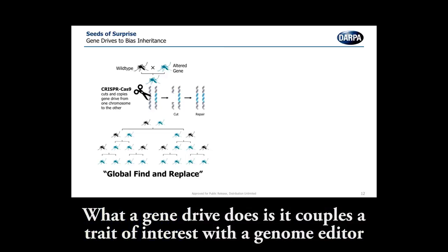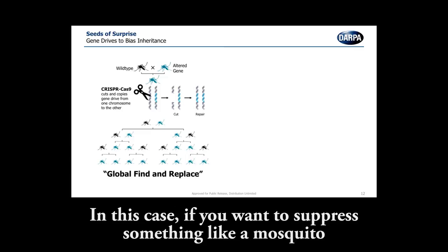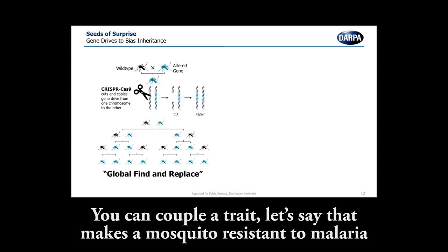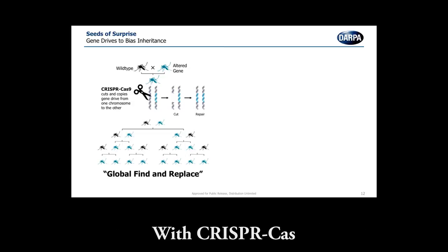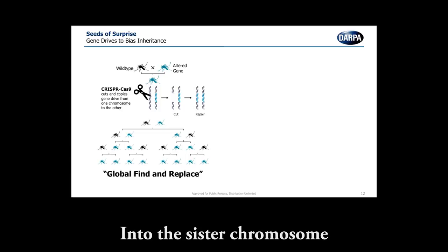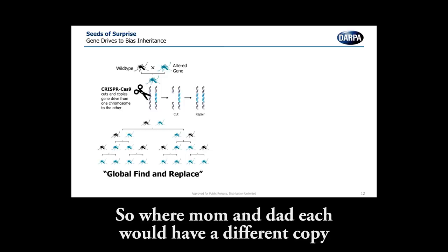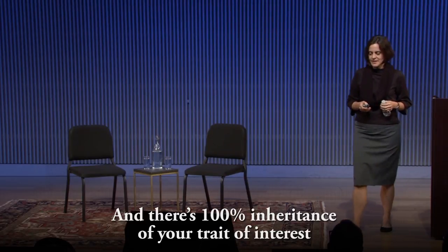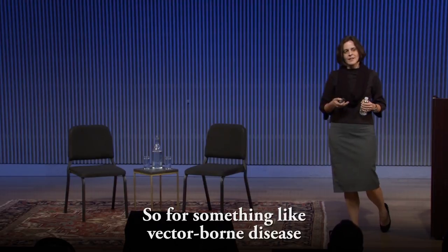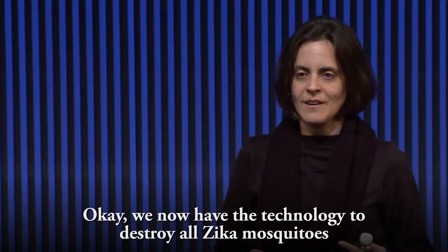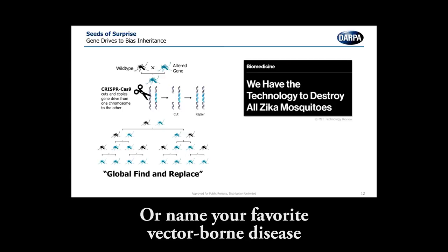What a gene drive does is it couples a trait of interest with a genome editor. If you want to suppress something like a mosquito that's a carrier of vector-borne diseases like malaria or dengue, you can couple a trait that makes a mosquito resistant to malaria with CRISPR-Cas. Through reproduction, it makes a copy of itself into the sister chromosome. So where mom and dad each would have a different copy, now dad's copy gets copied into mom's copy, and there's 100% inheritance of your trait of interest. People have heralded that we now have the technology to eliminate all Zika mosquitoes, or name your favorite vector-borne disease.